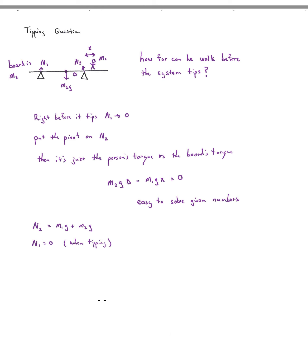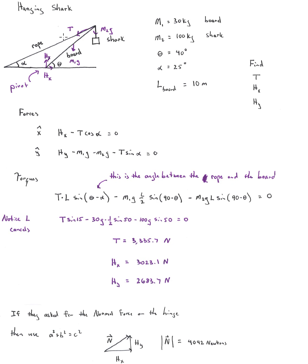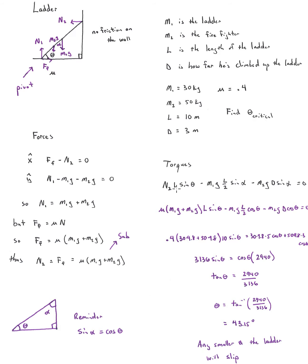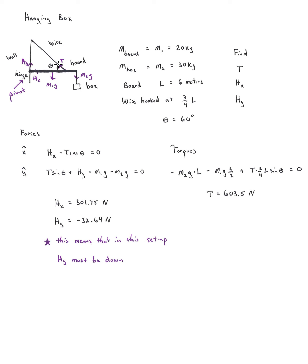There are variations to these four problem types, but these are the most popular. The tipping question, the shark question with a rope attached somewhere — the rope can be attached to the ceiling instead of the ground, but it's really the same approach. For the ladder, instead of finding theta you might be given theta and asked how large mu must be, or how high the firefighter can climb before it slips. The hanging box or sign question and the bear-on-a-board question are all essentially the same type. Hopefully these four questions sum up what we've covered on torque.